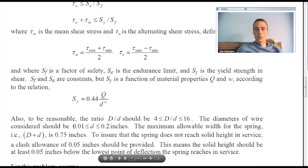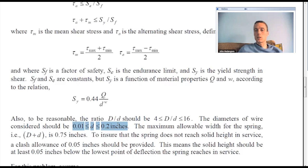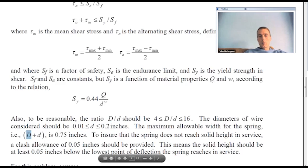Diameters of the wire, we have a choice. In some cases we might have the diameter of the wire might be in discrete values, but in this case we're just assuming that it's a continuous decision variable. Then we have the allowable width for the spring. Now that is going to be the diameter of the coil plus the diameter of the wire, and that's going to be less than 0.75 inches.